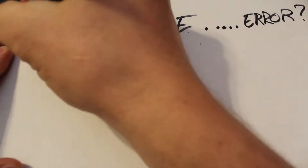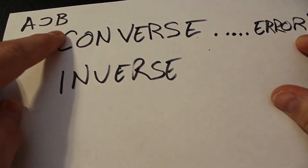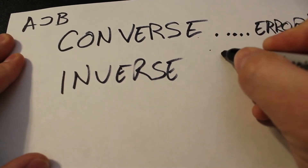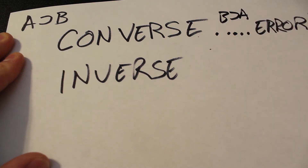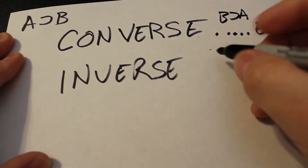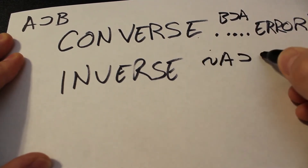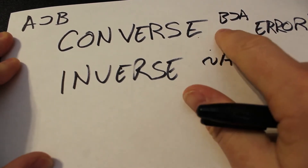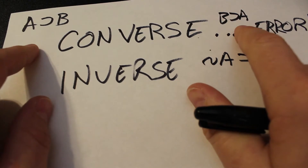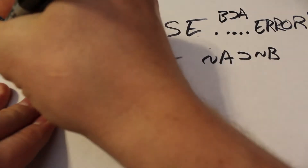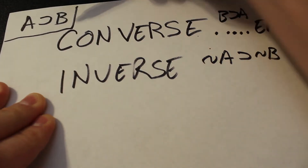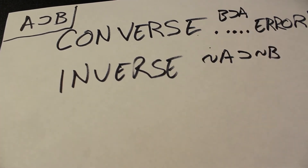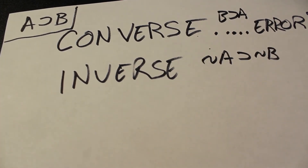So for example, given that A implies B — if A then B — the converse is going to be B implies A, and the inverse is going to be not A implies not B. What the converse would be saying is: if B happens then A happens. And you're supposing that if A happens then B happens is true — this original statement is correct.